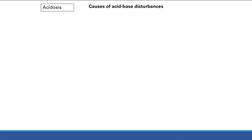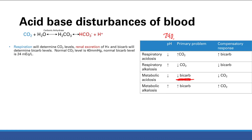Now we're going to delve deeper into these acid-base disturbances and talk about specific causes and how to identify them. The easiest way to identify them is to look at the pH and then look at the CO2. If the pH and the CO2 go in the same direction, note that this is a metabolic problem. And then obviously, the pH tells you if it's an alkalosis or an acidosis.